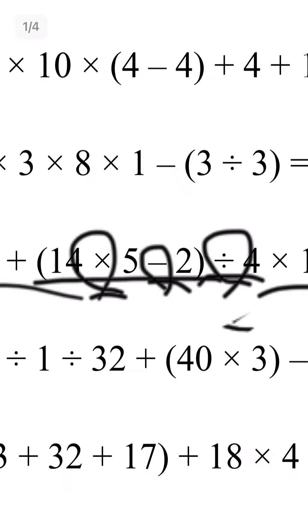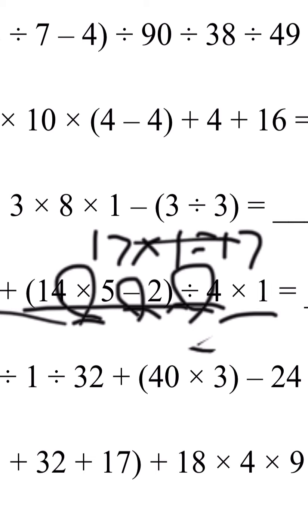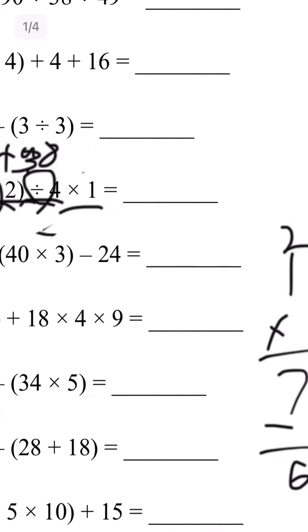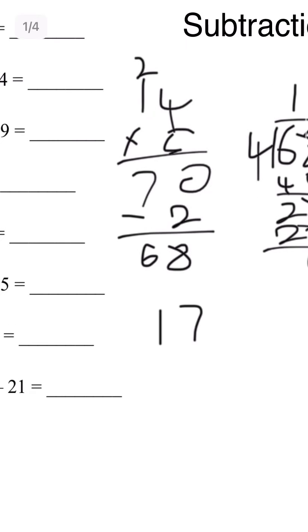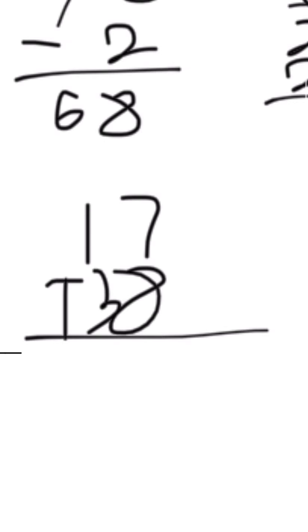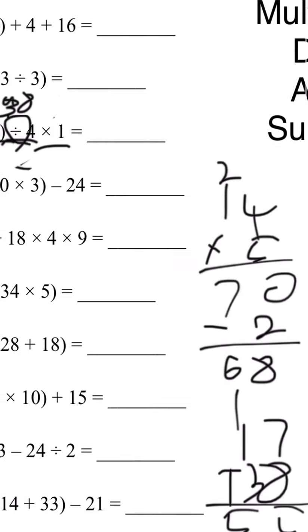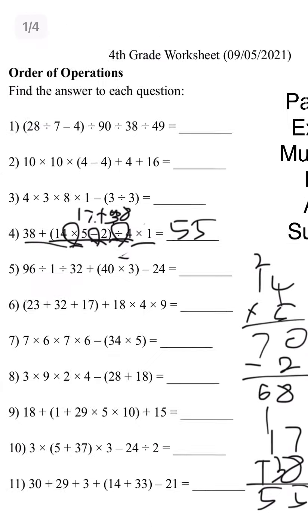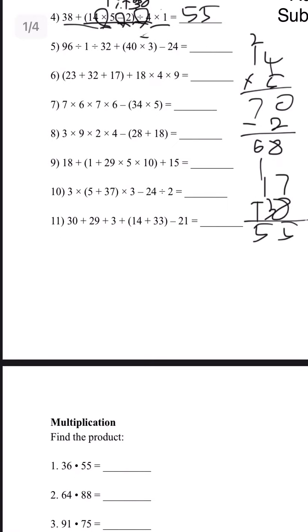17 times 1 is just 17, so we need to add it. 17 plus 38: 7 plus 8 is 15, 1 plus 1 plus 3 is 5. So number 4 answer is 55. Let's do the next page.